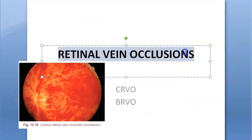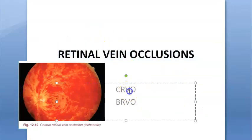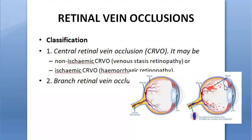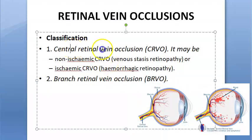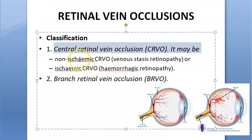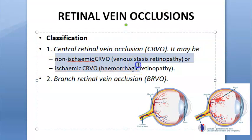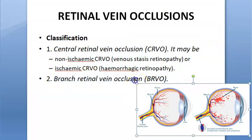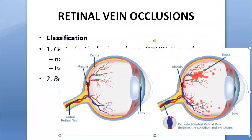In this video, let us look at retinal vein occlusion — CRVO and BRVO. There are two types: central retinal vein occlusion (CRVO) and branch retinal vein occlusion (BRVO). Under CRVO, you can have non-ischemic or ischemic. Let us look at where the central retinal vein is.